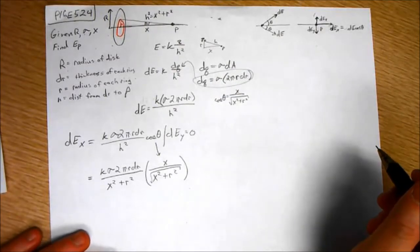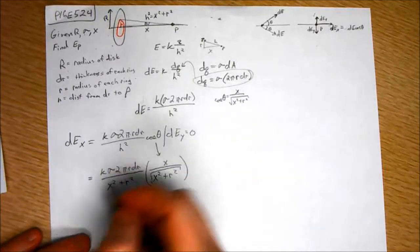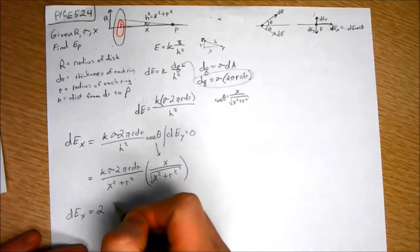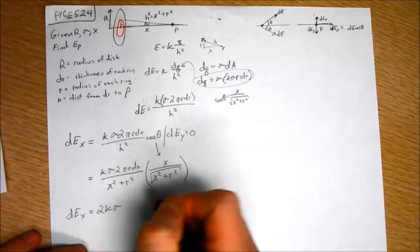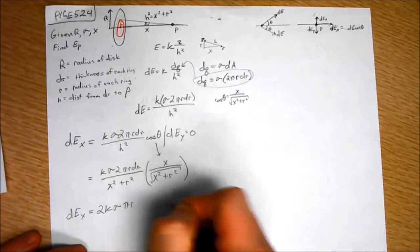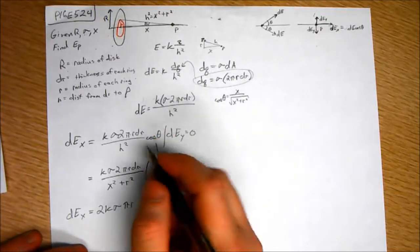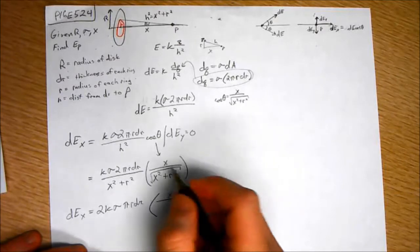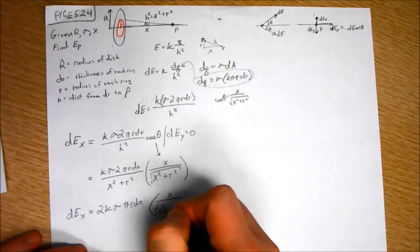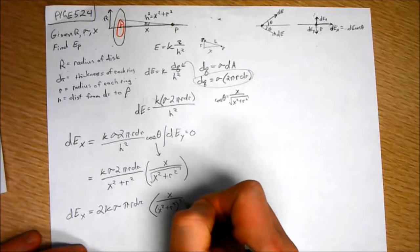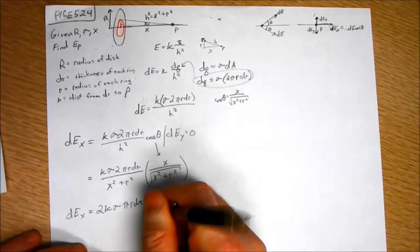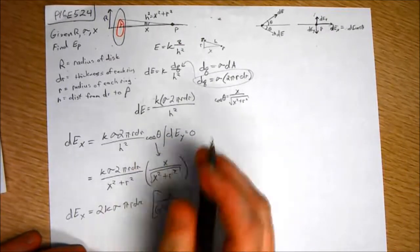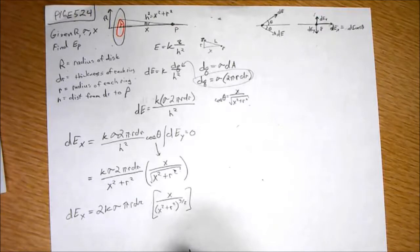So we can now make this a little prettier, I guess. Let's say DEX equals K, bring that 2K sigma pi R dr times X over X squared plus R squared to the three halves, because it's 1 plus 1 half power. So, that's just 3 halves power.